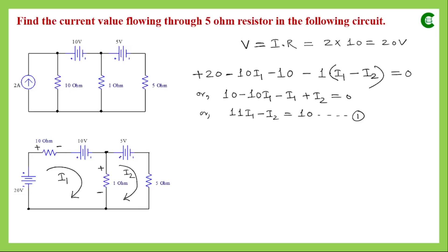For the second loop, starting from a point and traversing in the direction of I2, the 5V source is traversed from positive to negative, giving −5V. Then through the 5Ω resistor, the drop is 5×I2, taken as negative. Through the 1Ω resistor, I2 flows upward — this end is at higher potential, that end at lower potential — so the voltage drop is 1×I2. But again both currents flow through this 1Ω resistor.